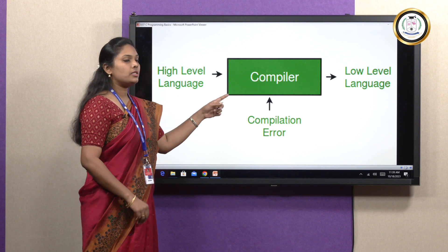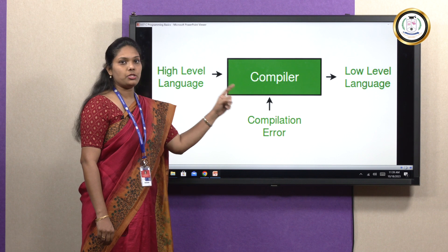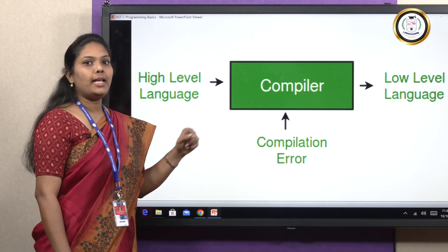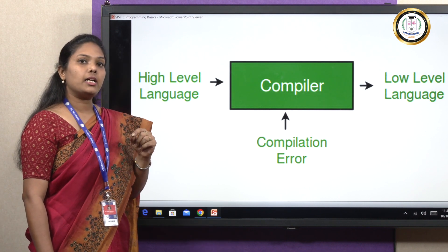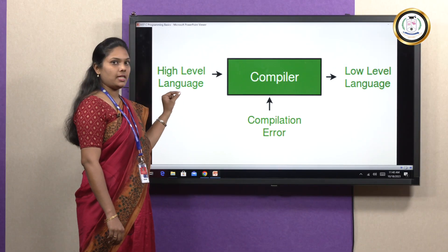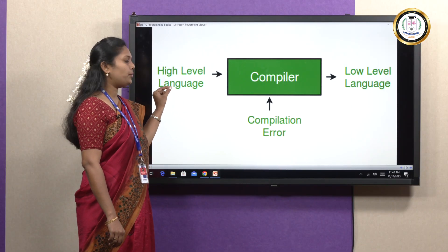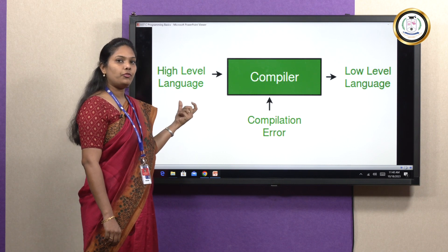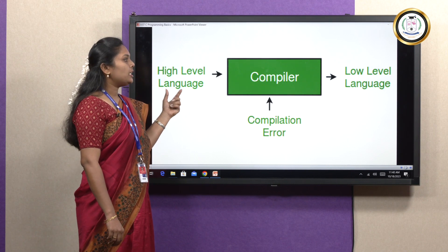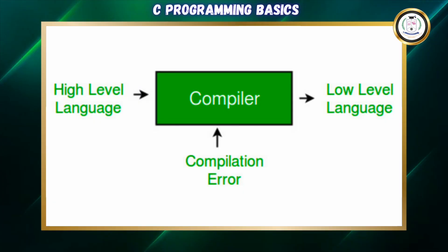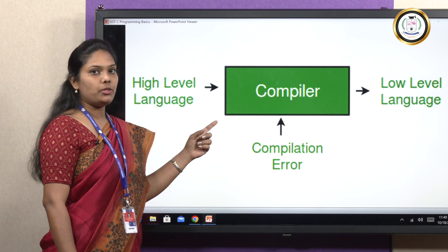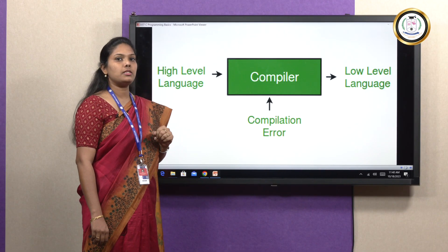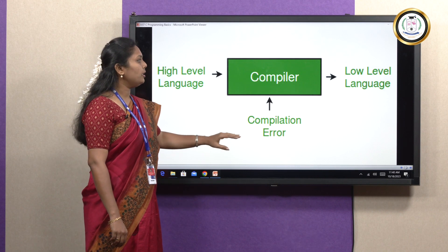The compiler's job is not only translating high-level programming languages into zeros and ones, but it also helps us resolve compilation errors. A compilation error is a grammatical mistake — a syntactical error found in the program. If you write an incorrect program not following the syntax, the compiler will prompt you to correct those errors. Only after a correct program without syntactical errors will the compiler convert it into machine-level language — zeros and ones.